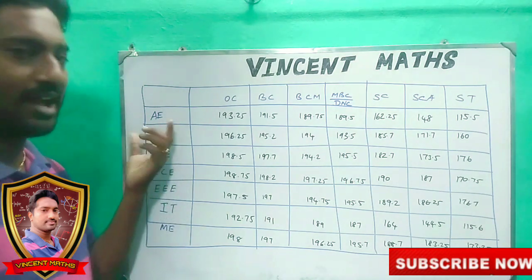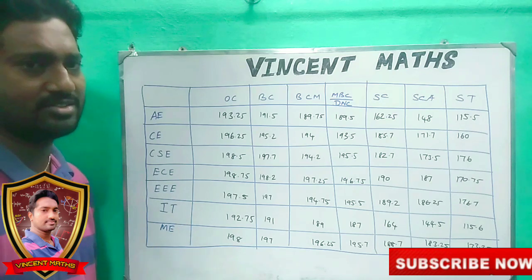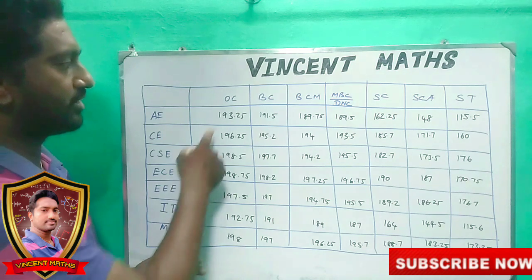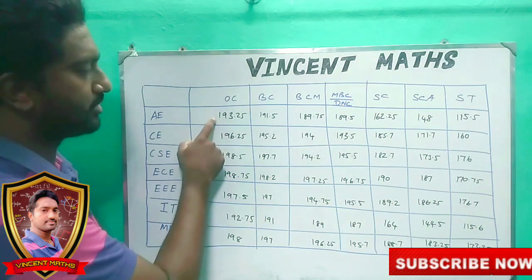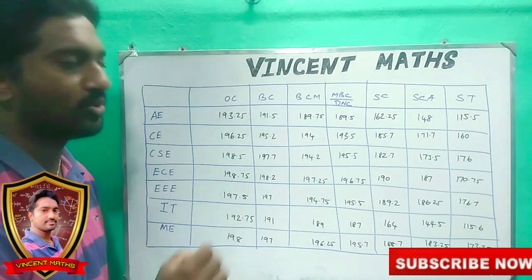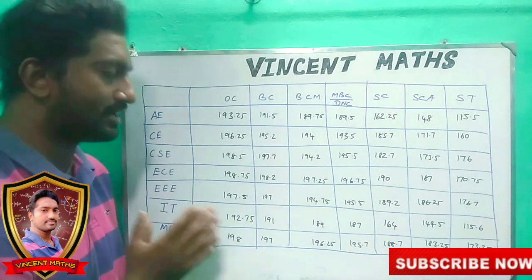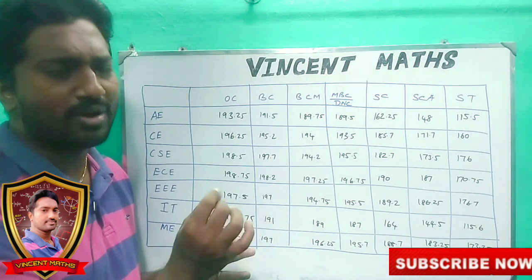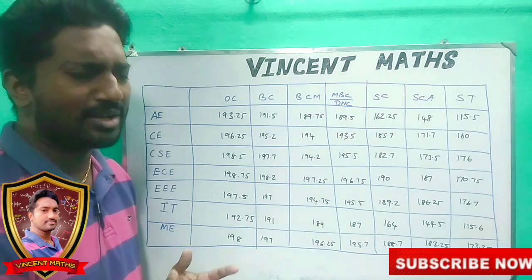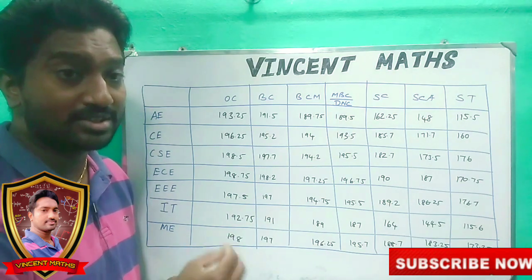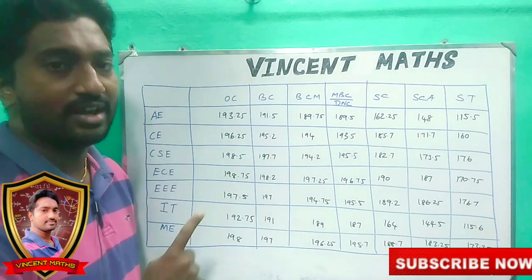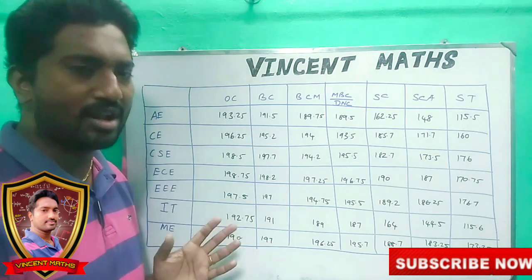Now look, first branch: Aeronautical Engineering. Last year, the highest cutoff was 193.25 for OC. BC was 190.5, BCM was 189.75, MBC was 189.5, SC was 162, SCA was 148, and ST was 150.